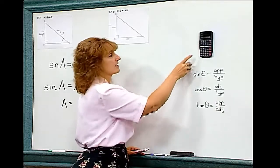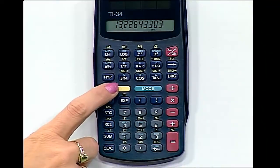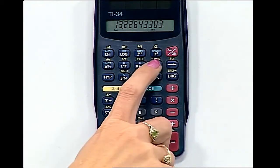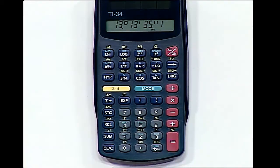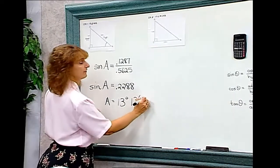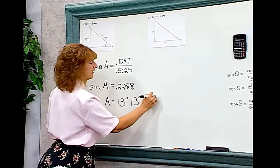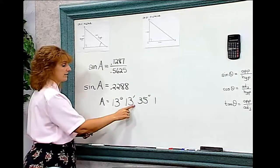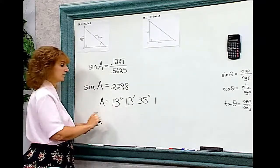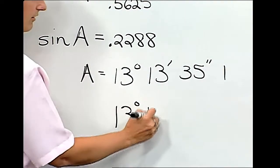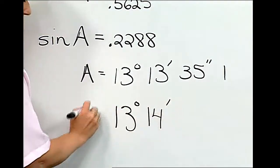And in this case, we're going to round it to the nearest minute. So first, I'm going to hit second and come up to degrees, minutes, second. And I have 13 degrees, 13 minutes, 35 seconds, with the one left over. But if I want to round to the nearest minute, I'm going to make that 13 degrees, 14 minutes for angle A.